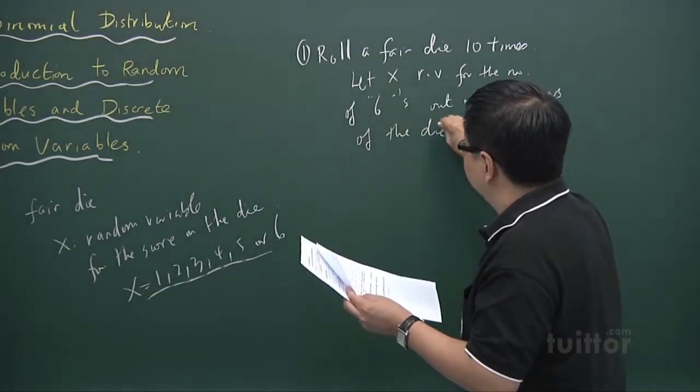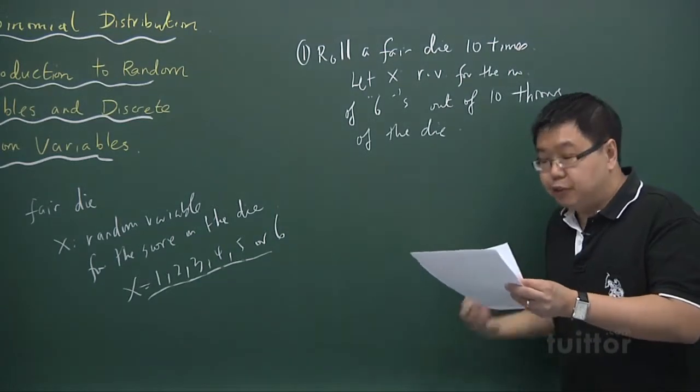Now, in that case, x is actually a discrete random variable.